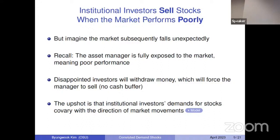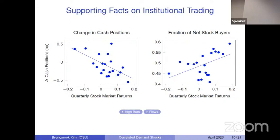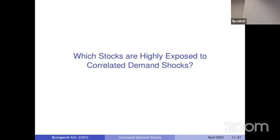The empirical evidence is consistent with the notion of pro-cyclical risk-taking behavior. Among active mutual funds, when the stock market is performing well and they underperform, they tend to decrease their cash holdings and tend to be net stock buyers during good stock market performance. This is consistent with the notion of pro-cyclical risk-taking behavior to catch up with market performance. Given this risk-taking behavior that varies across time, I now think about the cross-section — which stocks are highly exposed to these forces.